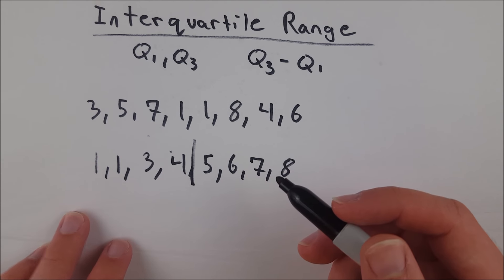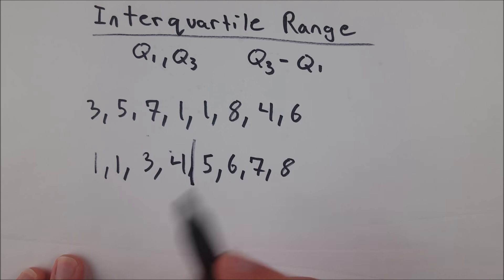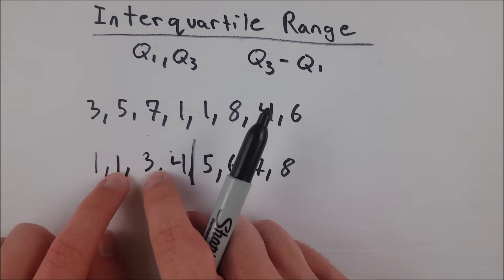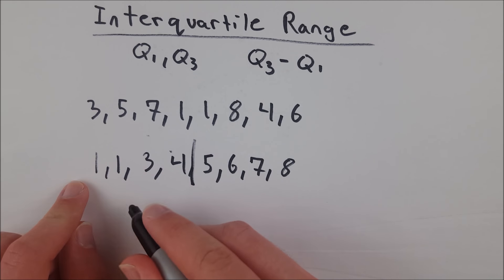So now to find the first quartile, of course, we just need to find the median of this lower half of data. Go in one, go in two. The median of this lower half of data is halfway between one and three, so it's two. That's the first quartile.